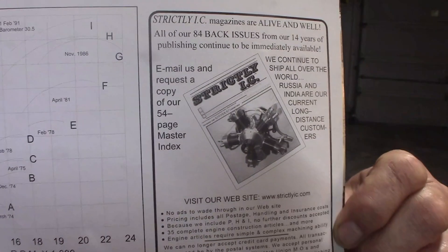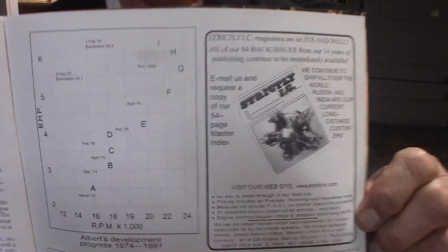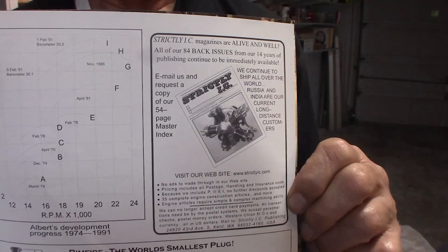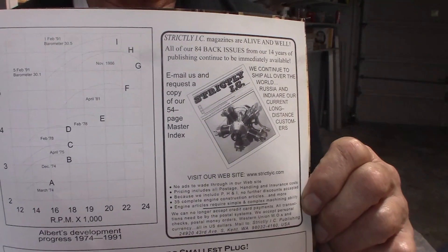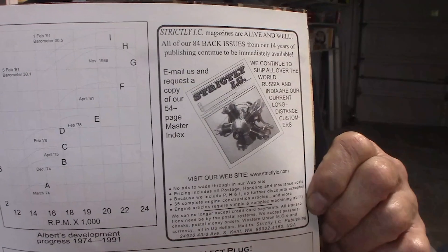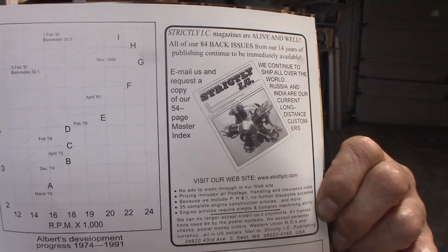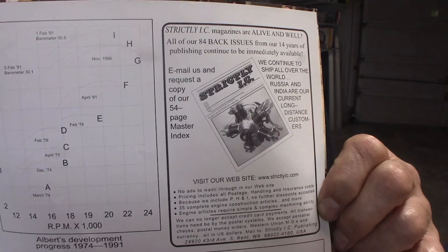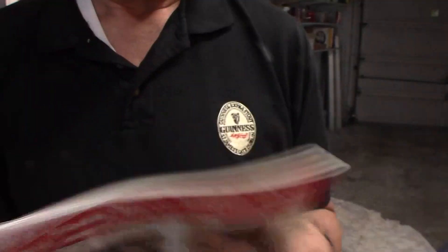A lot of this material's dated, but there are Strictly IC issues out there - that's an excellent magazine. Gets really into the nitty-gritty of model engine constructing. And there are back issues available on eBay from time to time. It's a very valuable resource, Strictly IC magazine.